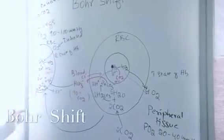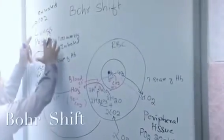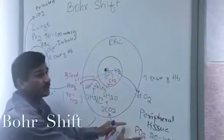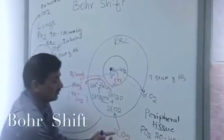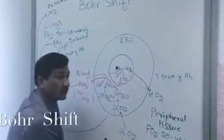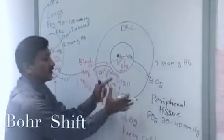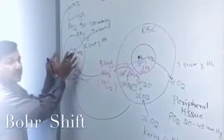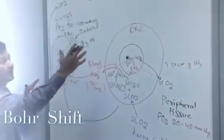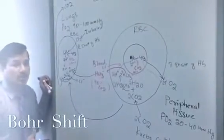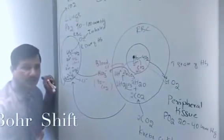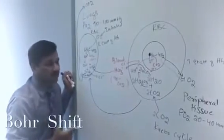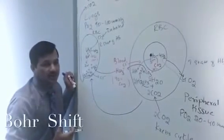This is how oxygen is brought from the lungs and released in the peripheral tissue, whereas the carbon dioxide — which is the byproduct of the Krebs cycle — is taken from the peripheral tissue and released in the lungs. This entire effect we call the Bohr effect, or it is also called the Bohr shift. I hope you understood the concept. Thank you for watching.